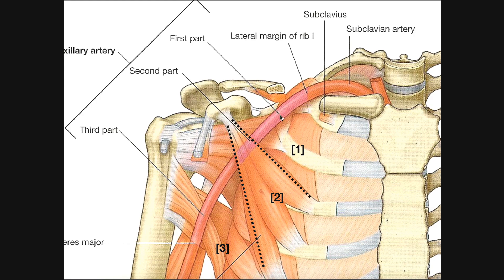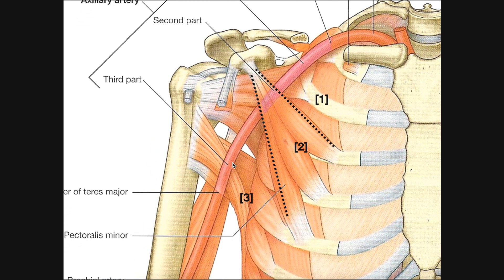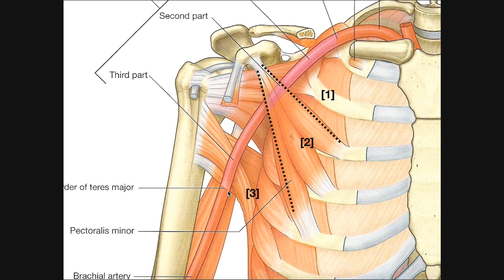The axillary artery travels in the axilla, and for part of the time it travels underneath the pectoralis minor muscle. The pectoralis minor originates on ribs three, four, and five, and then the fibers converge at the coracoid process. The axillary artery passes under that muscle and emerges from it, and then goes down to where it passes over the lower border of teres major, at which point it becomes the brachial artery.